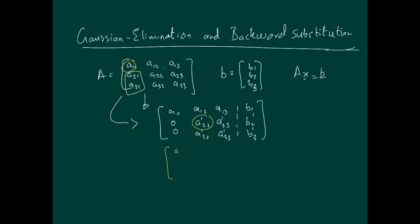And then further reduction will lead to a11, a12, a13, dot dot dot b1, and then you'll have zeros here.